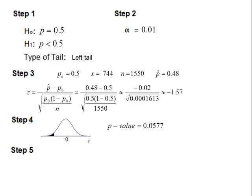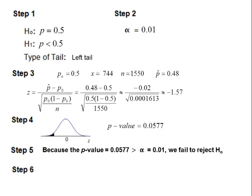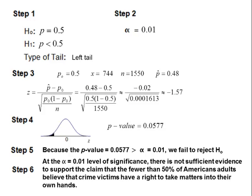Step five, we compare the p-value to the alpha level. Because the p-value equals 0.0577, which is greater than alpha equal to 0.01, we fail to reject the null. Step six, at the alpha equal 0.01 level of significance, there is not sufficient evidence to support the claim that fewer than 50% of American adults believe that crime victims have a right to take matters into their own hands.